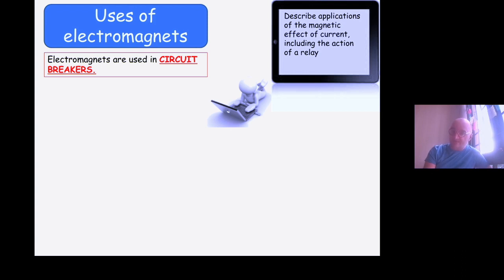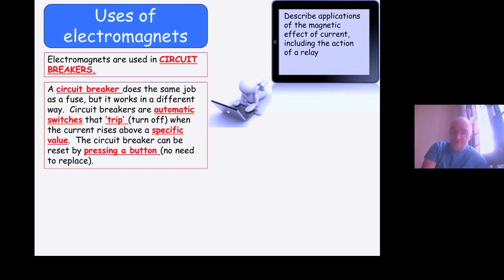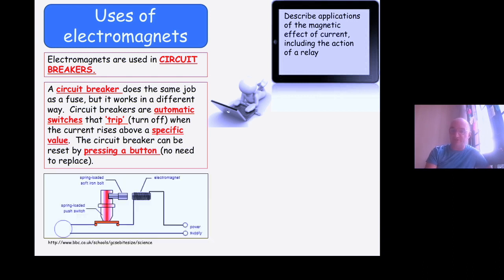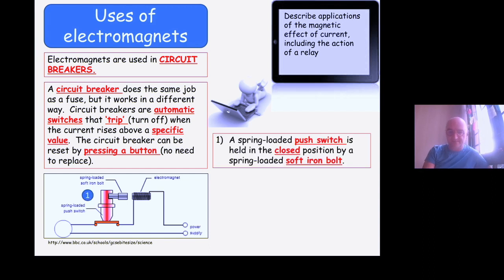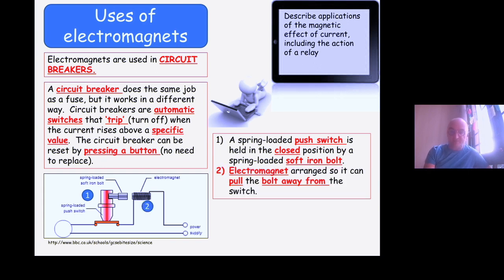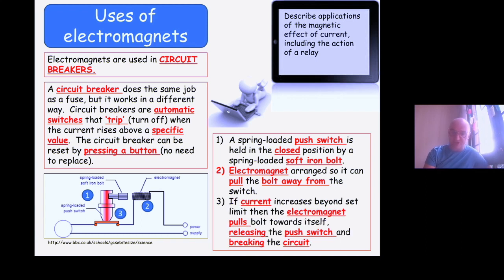Electromagnets are used in circuit breakers for safety in the home. It does the same job as a fuse, but they trip on and trip off when there's a surge in voltage. Say there's a problem at the power station or with the transformer going to your block, a surge in current or voltage, and the electromagnetic trip switch will turn it off and save your house from potential fire and damage. It's a spring-loaded switch held in the closed position by a soft iron bolt. The electromagnet is arranged so it can pull the bolt away. When the current increases beyond the set limit, the electromagnet pulls the bolt towards itself, releasing the push switch and breaking the circuit. Again, another three-mark, maybe four-mark question you could be asked in your IGCSE.